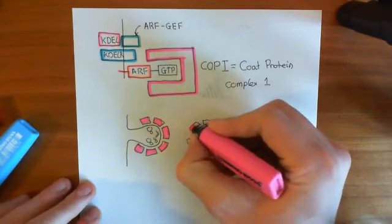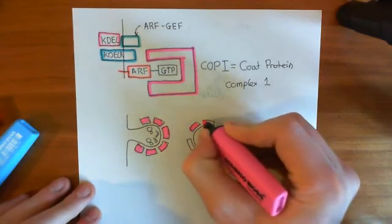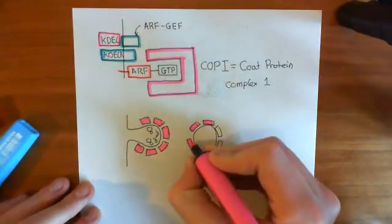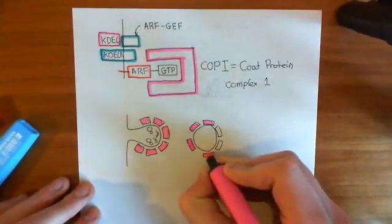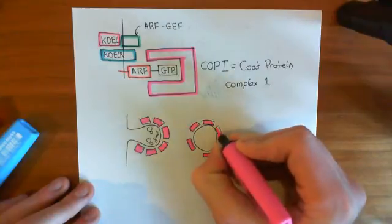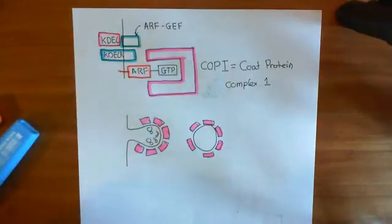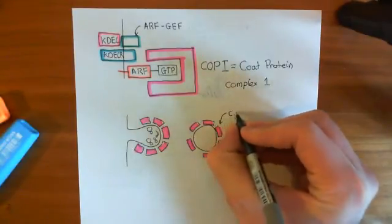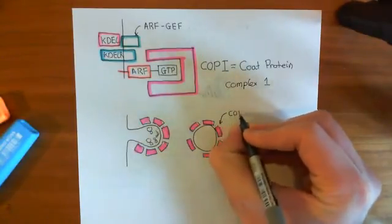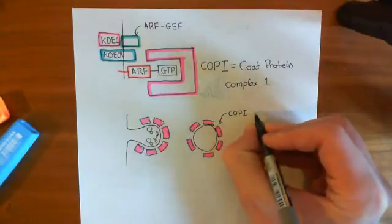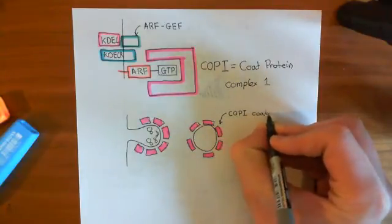This is our COP1-coated vesicle, which is going to make its way from the cis-Golgi to the ER.